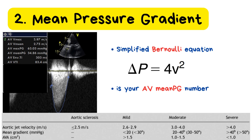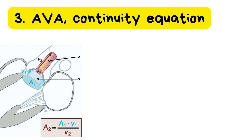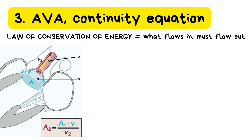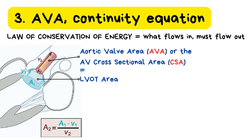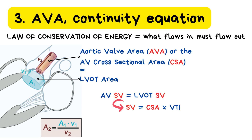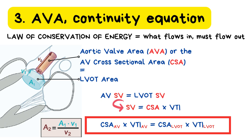Next, we'll look at the third key parameter: aortic valve area. The aortic valve area, or AVA, is calculated using the continuity equation, which is based on the law of conservation of mass and energy — meaning what flows in must flow out. The volume of blood passing through the left ventricular outflow tract, or LVOT, should equal the volume passing through the narrowed aortic valve. The equation assumes that stroke volume at the aortic valve equals stroke volume at the LVOT, where stroke volume is CSA multiplied by VTI. Therefore, the VTI through the cross-sectional area of the aortic valve must equal the amount of blood going through the cross-sectional area of the LVOT.